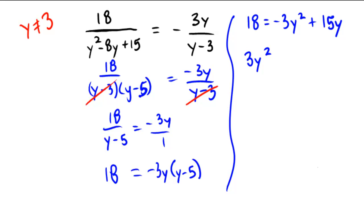So now I'll move everything over to the left-hand side. We'll get 3y squared minus 15y plus 18 equals 0.